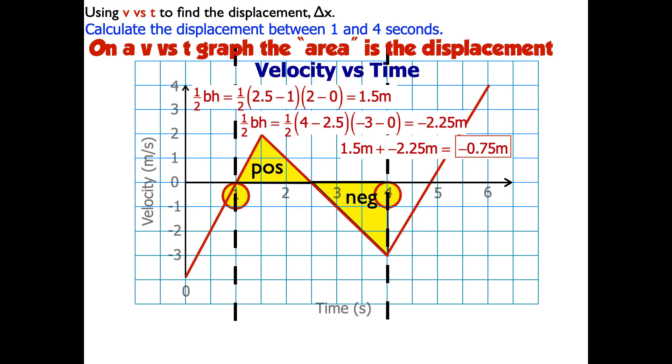So my displacement — my change in position, the displacement — is negative 0.75 meters.